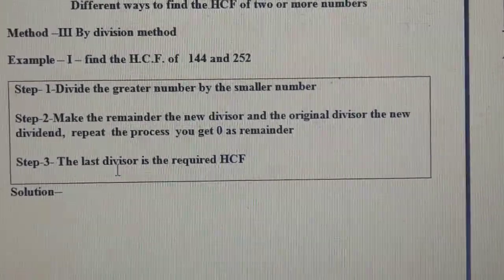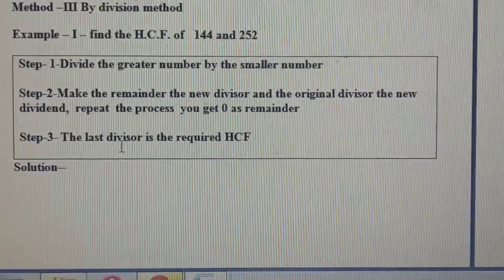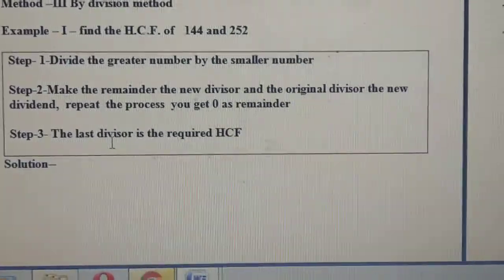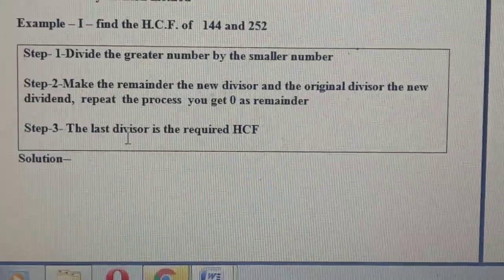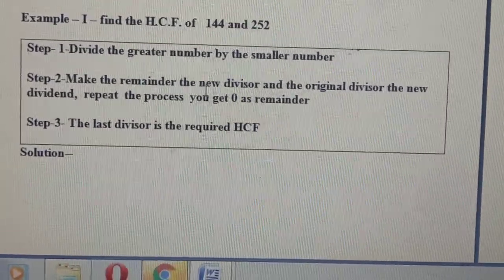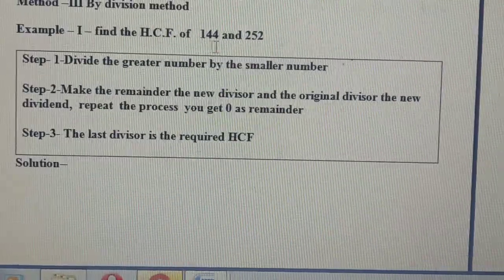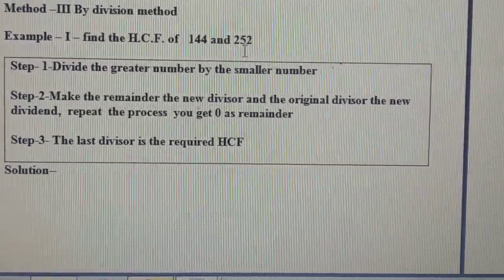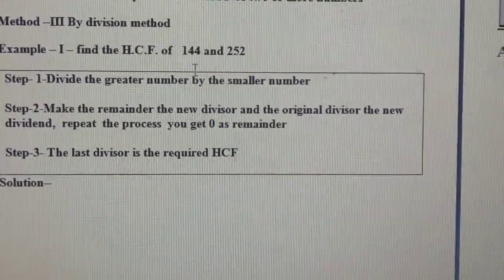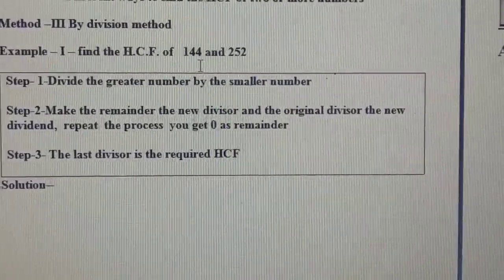For this I have written one example: find the HCF of 144 and 252. Some steps are also given. The first step is to divide the greater number by the smaller number. Out of these two, 252 is the greater number, so it will be the dividend, and 144 is the smaller number, so it will be the divisor.